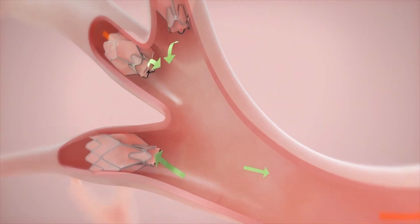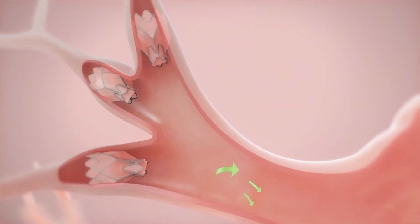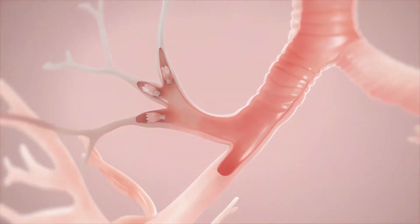Dependent on the airway anatomy, trapped air in the treated lobe escapes through the Zephyr valves until the lung volume of the treated lobe is reduced.